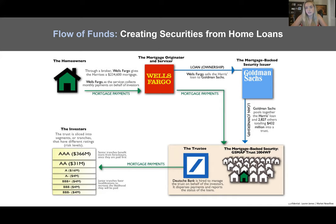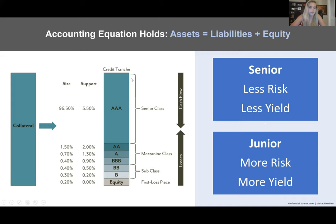The mortgage-backed security issuer — a bank like Goldman Sachs — creates these securities on the primary origination side by pulling together two, three, or four thousand mortgages into one trust, which goes to a trustee like Deutsche Bank. Deutsche Bank manages the trust on behalf of investors, disperses payments, reports on loan status, and takes a fee for this. They also arrange the capital structure with predominantly AAA-rated notes at the top — the most senior tranches paid first. As shown here, 96.5% of the debt is in the AAA senior class, with a tiny sliver of equity and small portions of subordinated debt. This subordination is also known as credit enhancement.